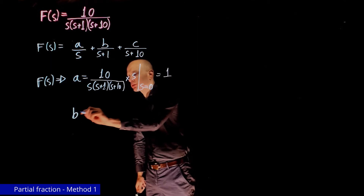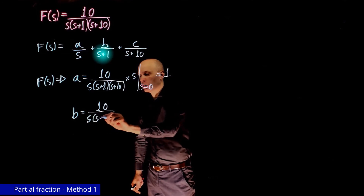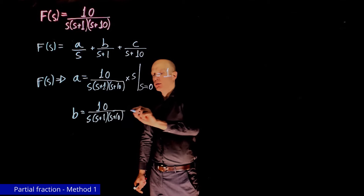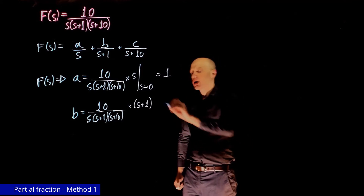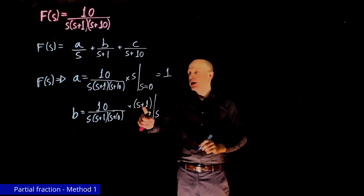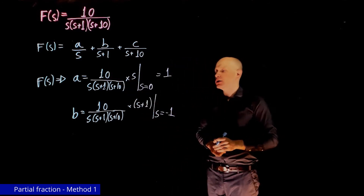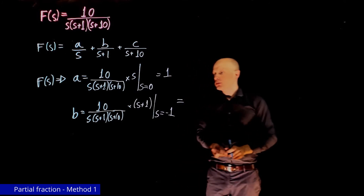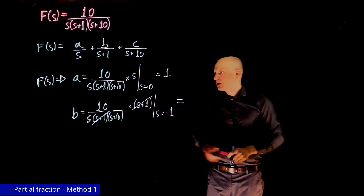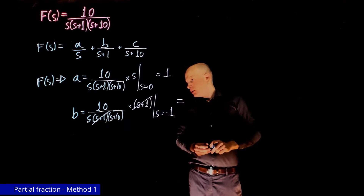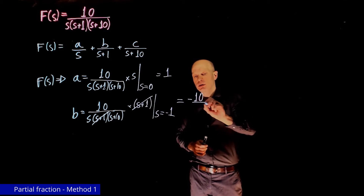For b, the same approach: take 10 over s(s+1)(s+10), multiply by the denominator of b — that is (s+1) — and set s equal to negative 1, which makes the denominator of b zero. The (s+1) terms cancel, giving 10 over (negative 1)(negative 1 + 10) = 10 over (negative 1)(9), so b equals negative 10 over 9.